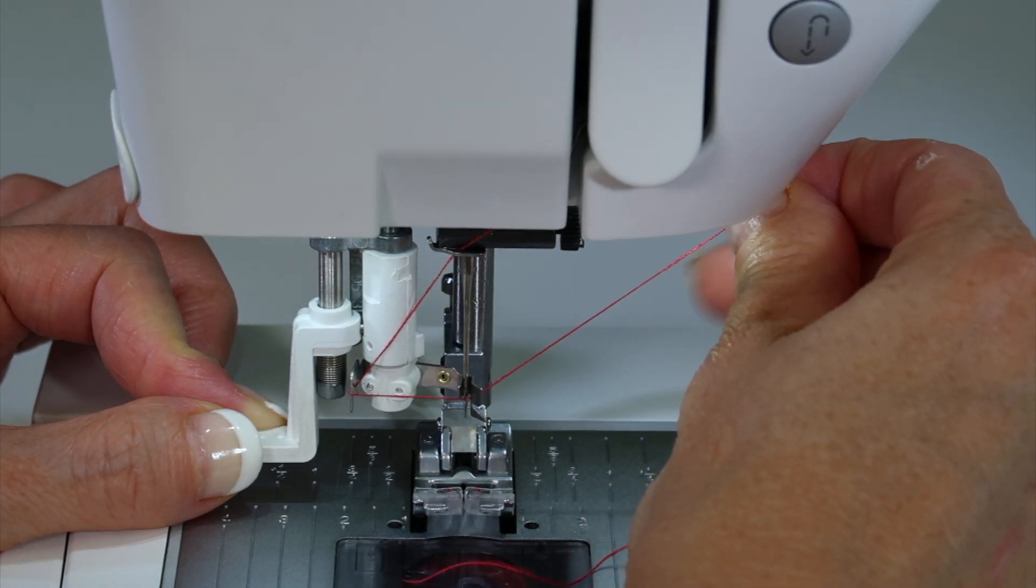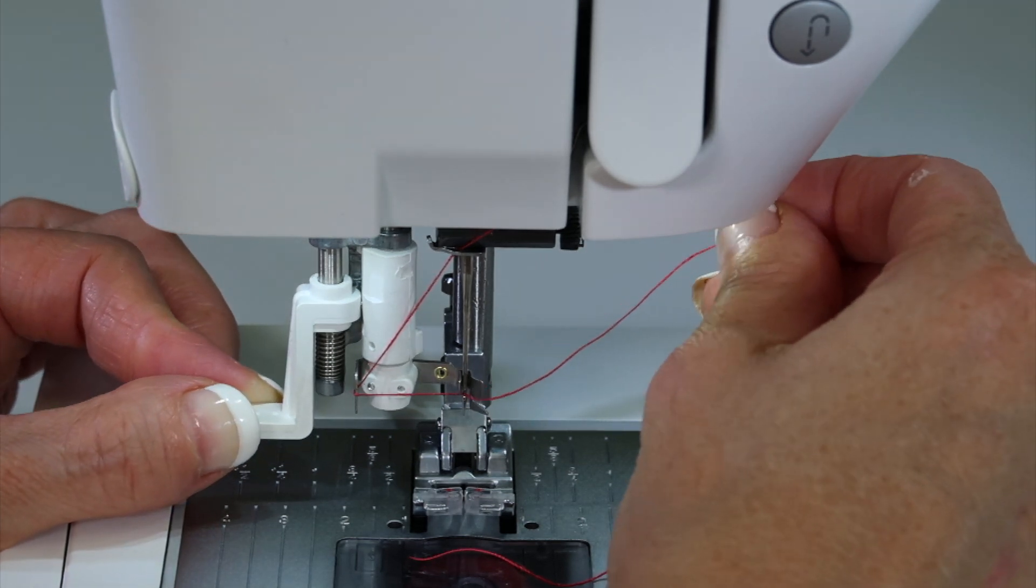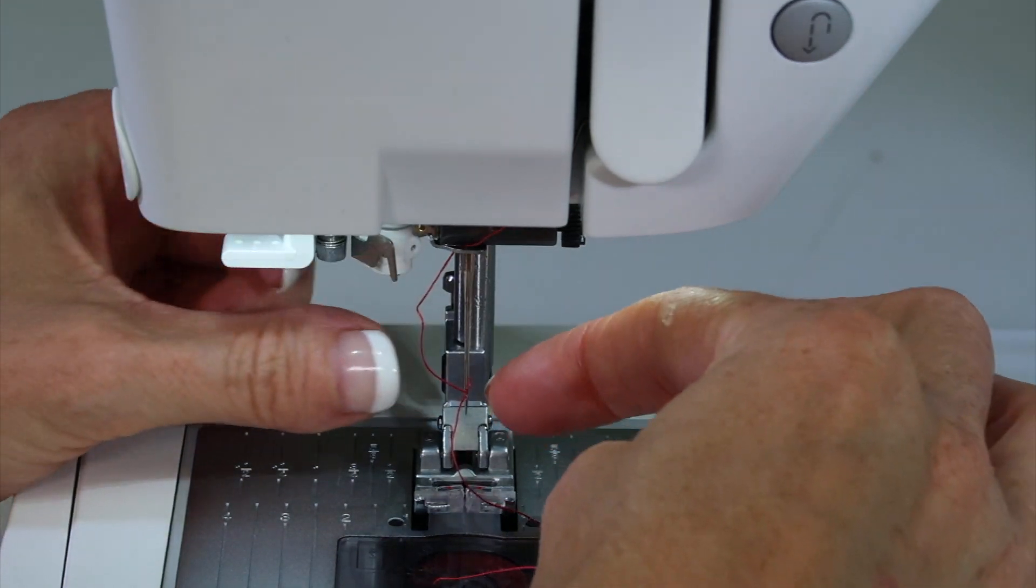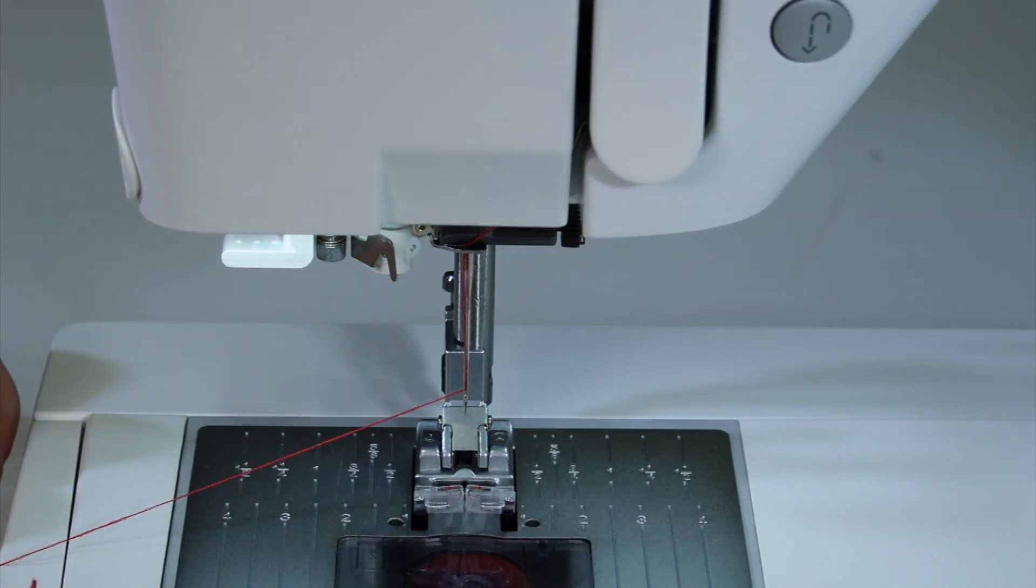Now if you hold on too tight over here, the thread will not go through the needle. So you kind of have to let it pull out of your fingers, and it will pull that little loop out the back, and that will be your thread that you'll pull all the way through the machine.